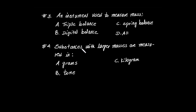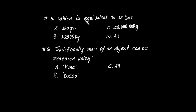Question 5: Which is equivalent to 12 tons? A, 120,000; B, 12,000 kilograms; C, 120,000,000; D, oil. Question 6: Traditionally, mass of an object can be measured using — A, B, Tasa; C, oil.